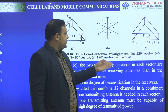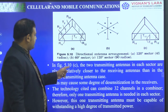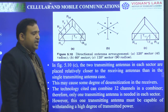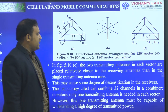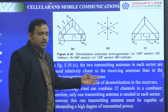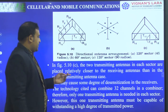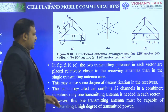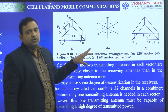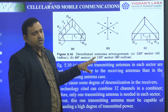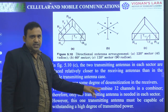In figure C, of 120-degree sector, we are using two transmitting antennas and two receiving antennas. In figure 5.10C, the two transmitting antennas in each sector are placed relatively closer to the receiving antennas than in the single transmitting antenna case. This may cause some degree of desensitization in the receivers, causing sensitivity signal issues.